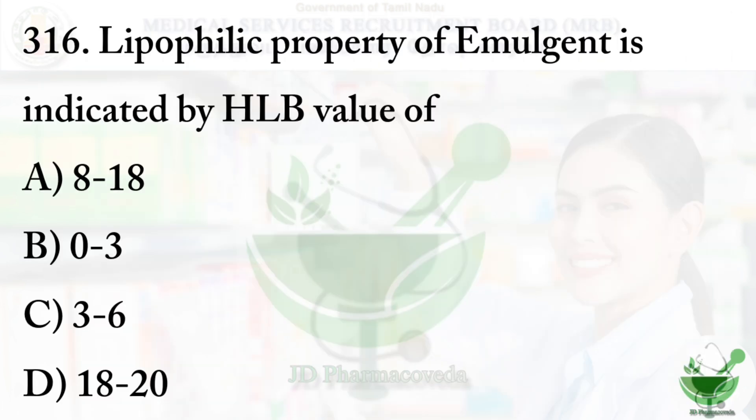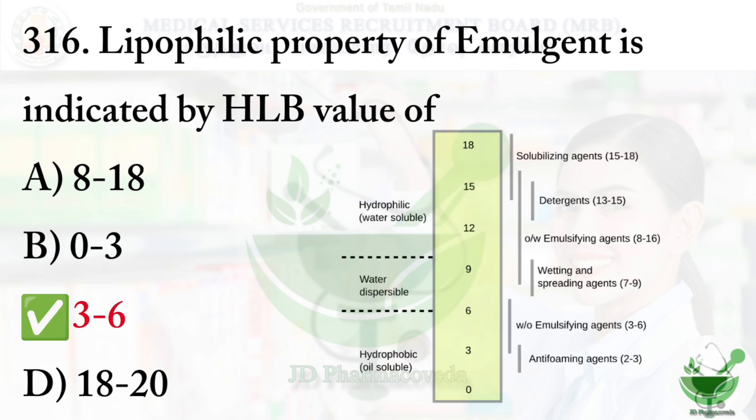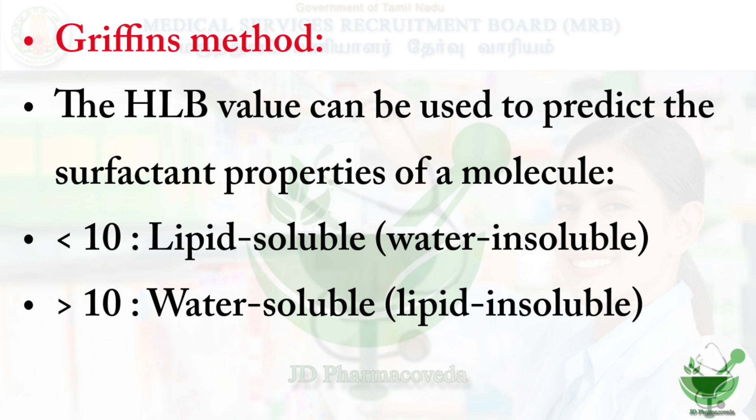Question number 316: The lipophilic property of emulgents is indicated by an HLB value of? Option A: 8 to 18, Option B: 0 to 3, Option C: 3 to 6, Option D: 18 to 20. The correct answer is Option C, 3 to 6. The HLB scale was developed by Griffin's method. Values less than 10 indicate lipid-soluble or water-insoluble particles; greater than 10 indicates water-soluble or lipid-insoluble particles.